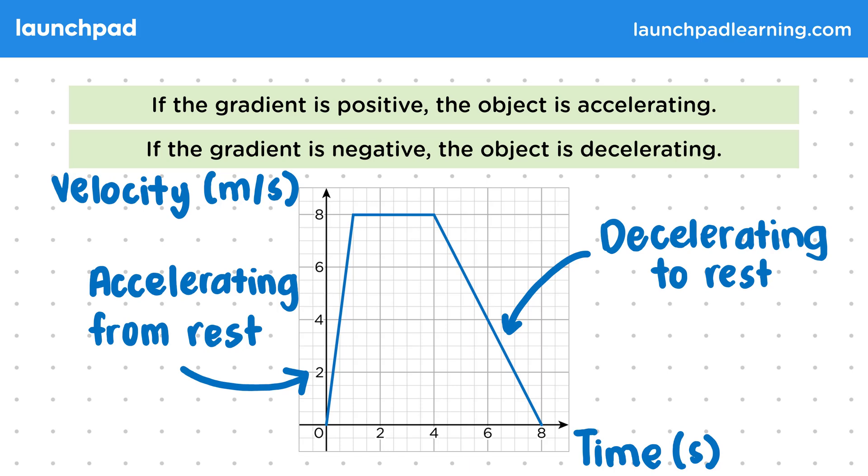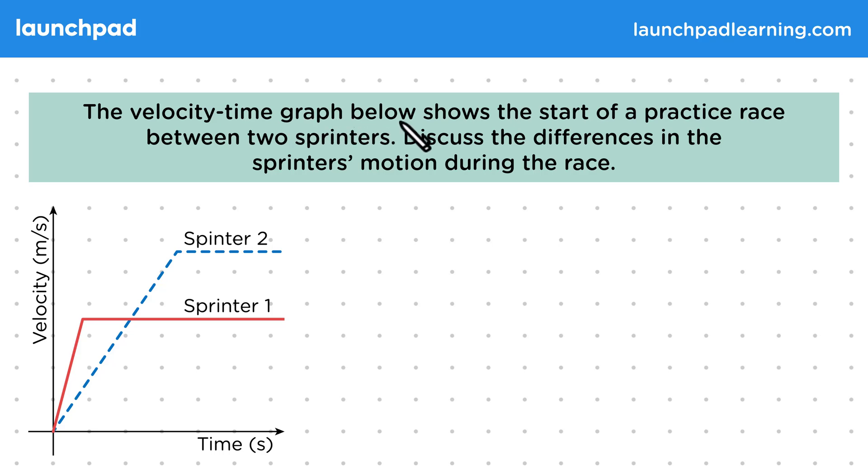Let's try doing this now with an example. The velocity-time graph below shows the start of a practice race between two sprinters. Discuss the differences in the sprinter's motion during the race. So this is an interesting example, where we have two graphs on the same axes and need to compare the two. Also notice that we're not given a scale on either axis, so there's going to be no calculations involved in this question. We're only describing the differences in words and need to have a good understanding of what the shapes of the graphs mean.